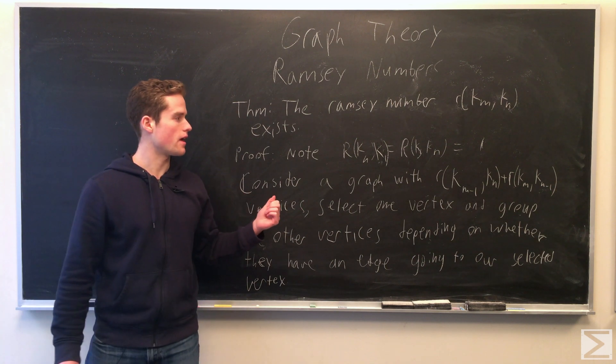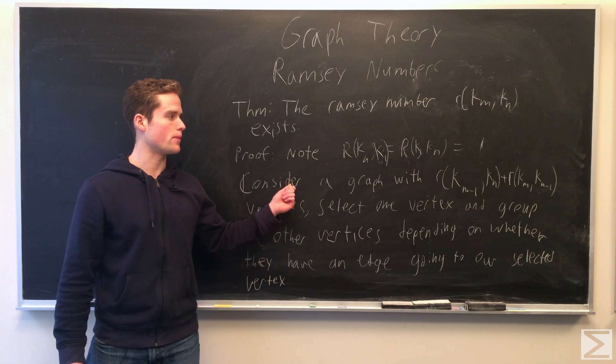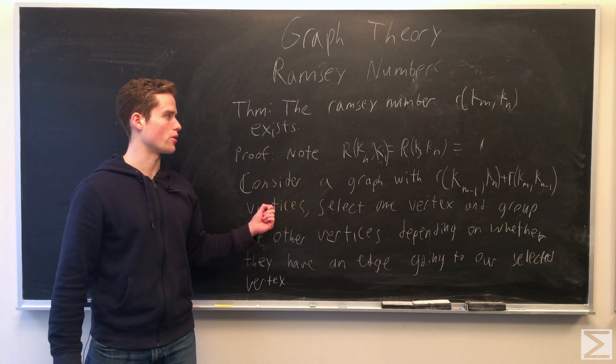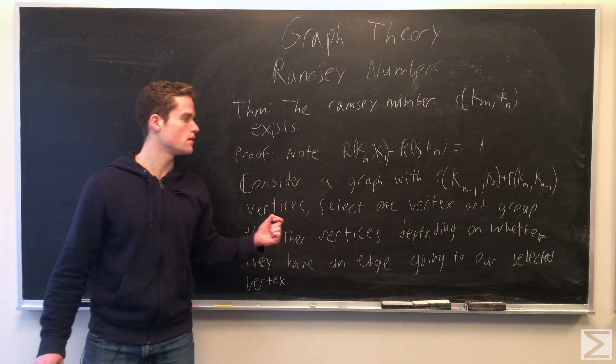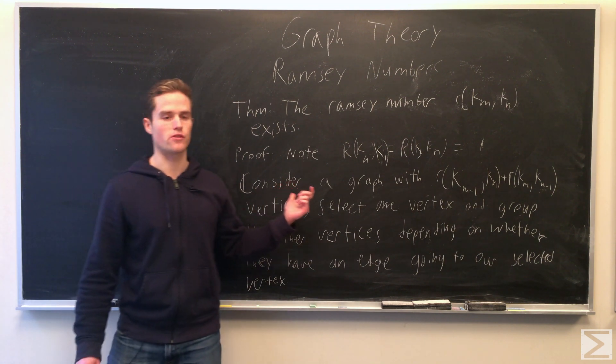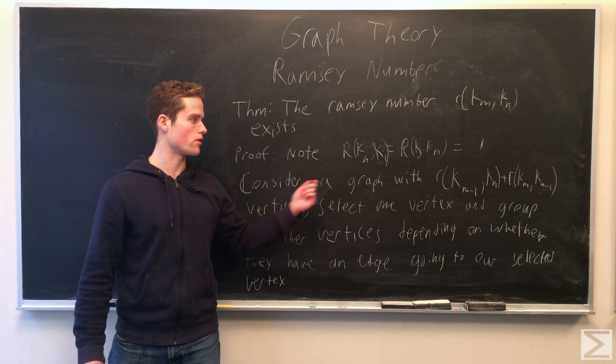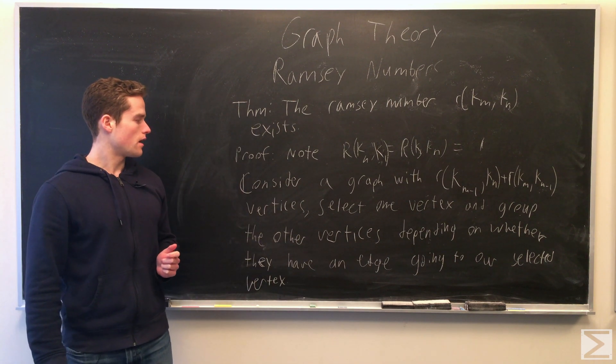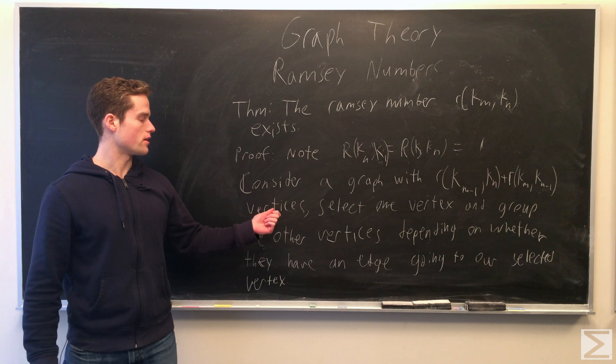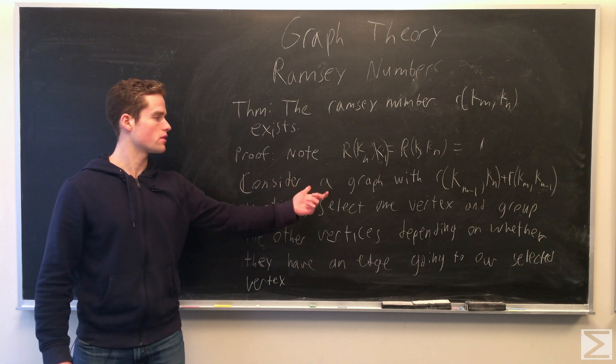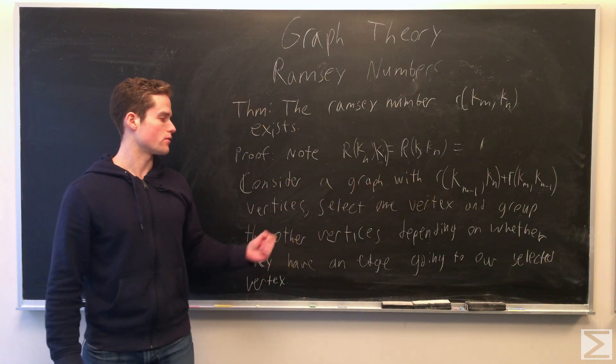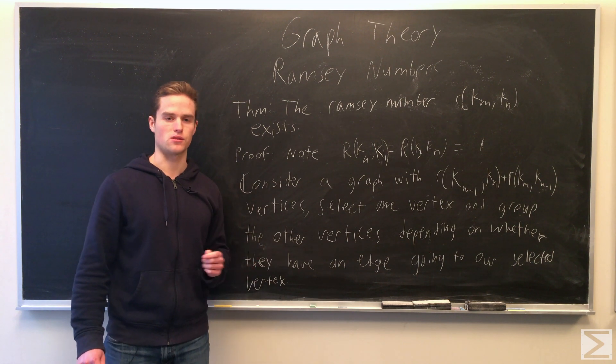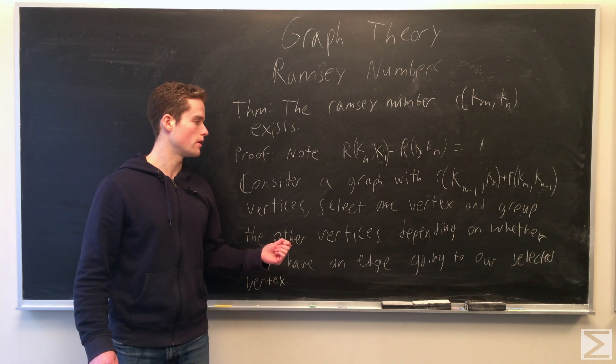Now we're going to consider a graph. We're going to assume R(k_n minus 1, k_n) exists and R(k_m, k_n minus 1) exists, so we assume the lower Ramsey numbers do exist. We have a graph with the order of R(k_n minus 1, k_n) plus R(k_m, k_n minus 1). We're going to select one vertex from this graph and pair up the vertices in the rest of the graph depending on whether or not they have an edge to our vertex.